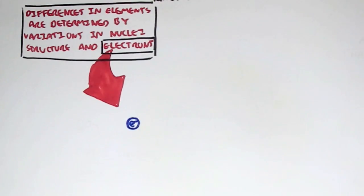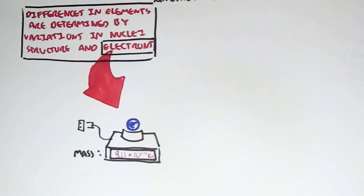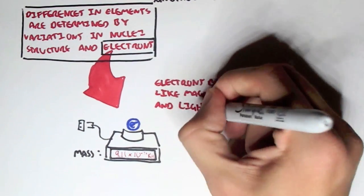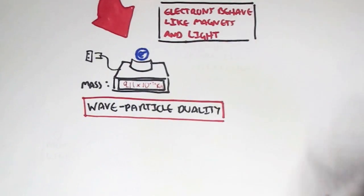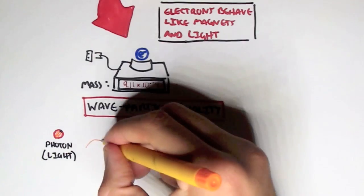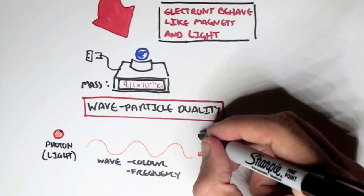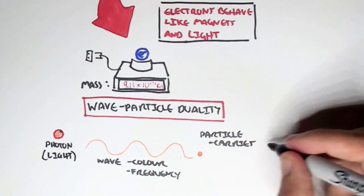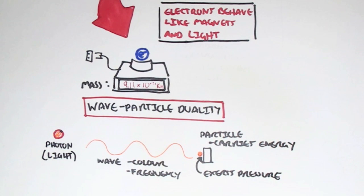Electrons also have a mass, about 9.11 x 10⁻³¹ kg, so very very small, very very light. Electrons also behave like magnets and light, which means that they have a wave and particle duality. A photon, which is a light particle, can be a wave — can have wave properties, which means that it can have color as well as a particular frequency. A photon, a light particle, can also carry energy. And so when it hits something, it can exert some form of pressure because it has energy. This is the wave-particle duality because the photon can both be a wave and a particle.